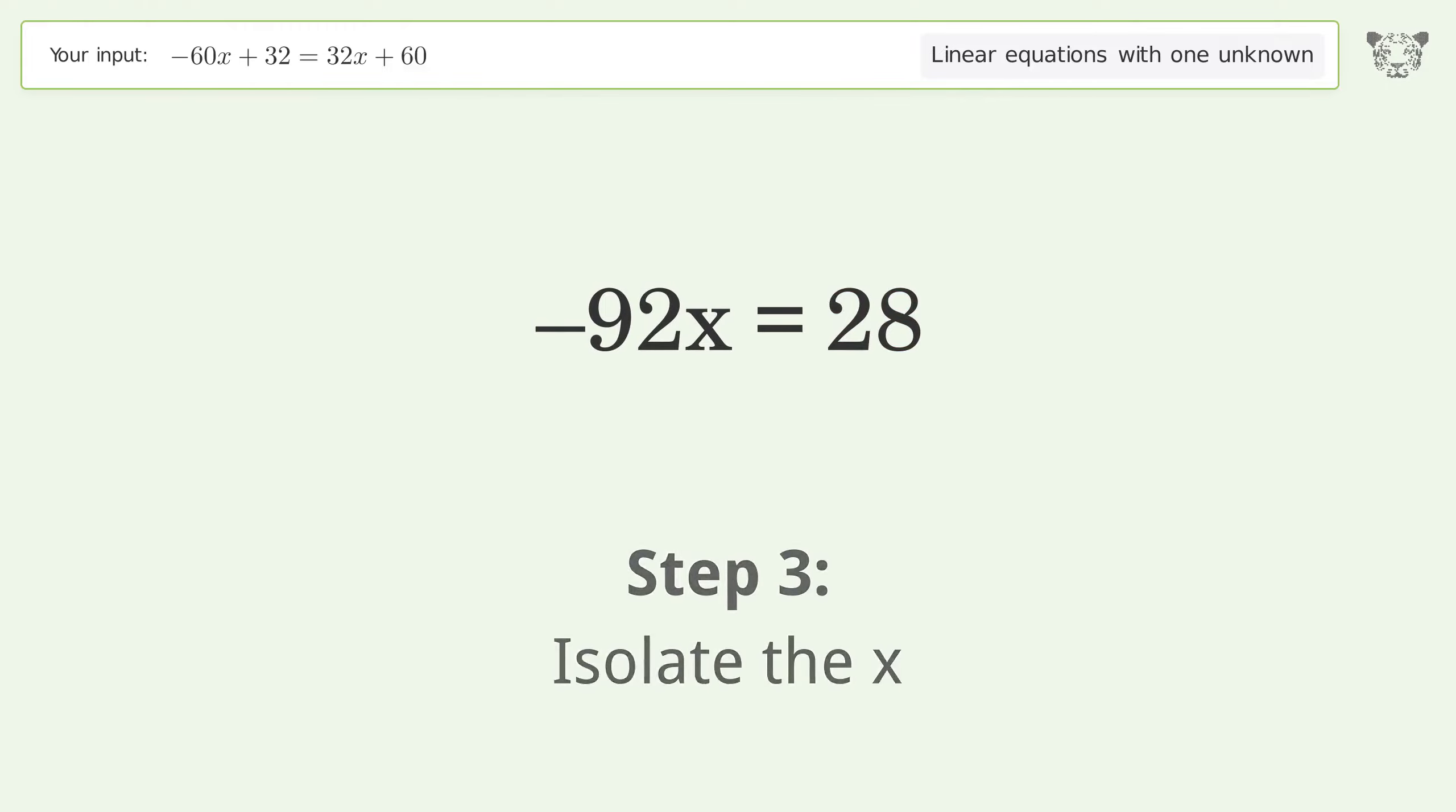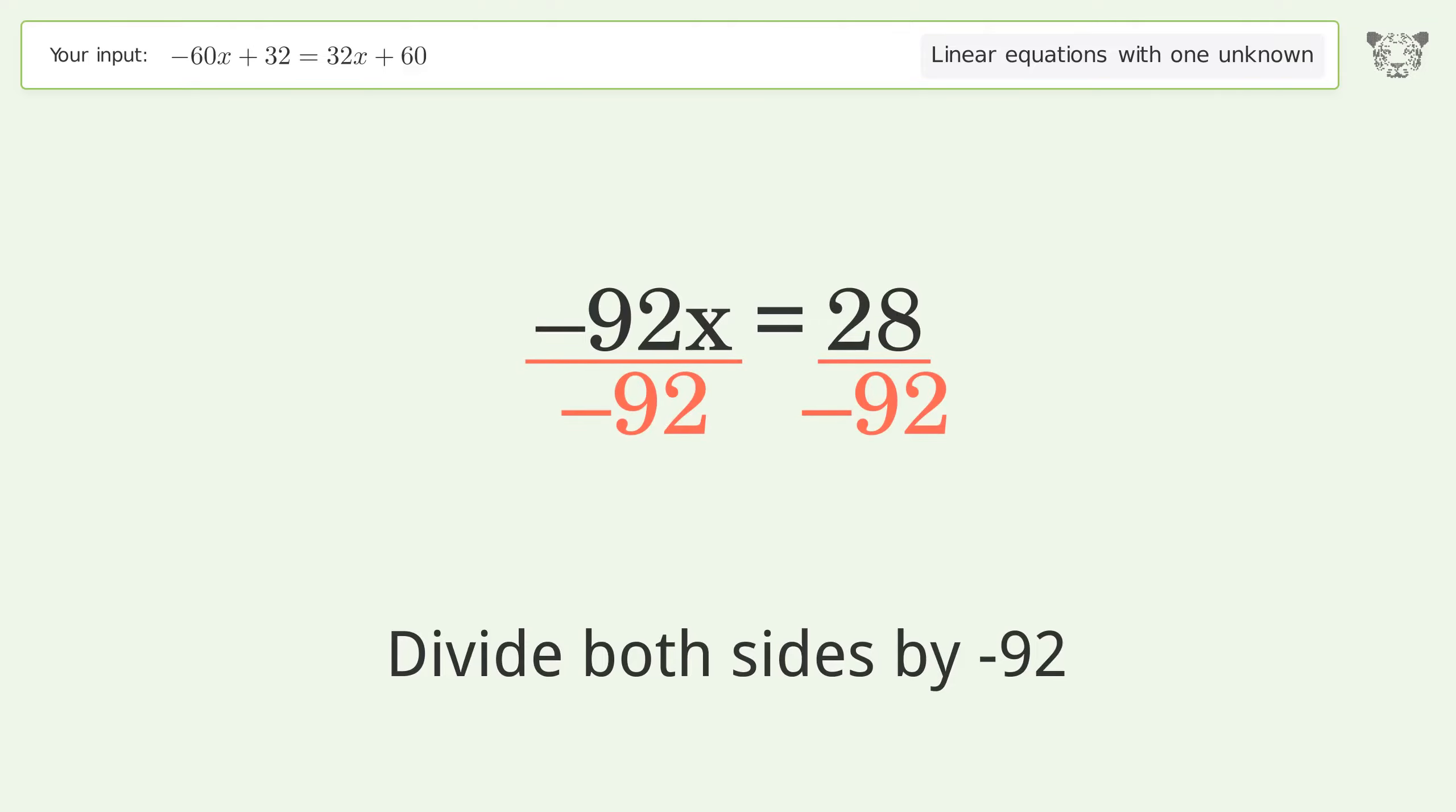Isolate the x. Divide both sides by negative 92. Cancel out the negatives.